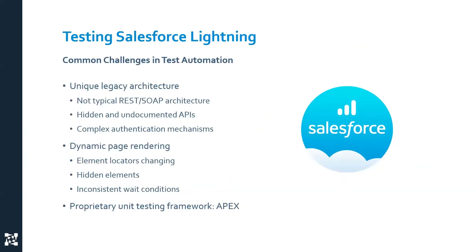When looking specifically at Salesforce applications, there are some common challenges that enterprises go through when adopting Salesforce. At a high level, Salesforce has a unique legacy architecture, which means it doesn't follow the traditional modern approach to building web applications. Rather than having a front-end layer, a service layer, and a back-end layer, you end up with various different services and a complex front-end layer with additional services hidden in that front end. So you don't typically see those REST or SOAP calls that you would normally see in a traditional web application.